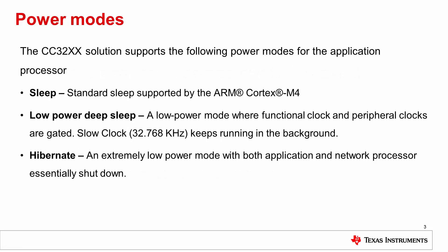The CC3220 device supports the following power modes. Sleep mode, which is a standard low power mode for the ARM Cortex M4 processor. Low power deep sleep mode, which will be referred to as LPDS for this tutorial. In this mode, the functional clock and peripheral clocks are gated, while the slow clock continues running in the background. Lastly, Hibernate is an extremely low power mode that shuts down both the application and network processors; the slow clock continues to run in this mode as well.